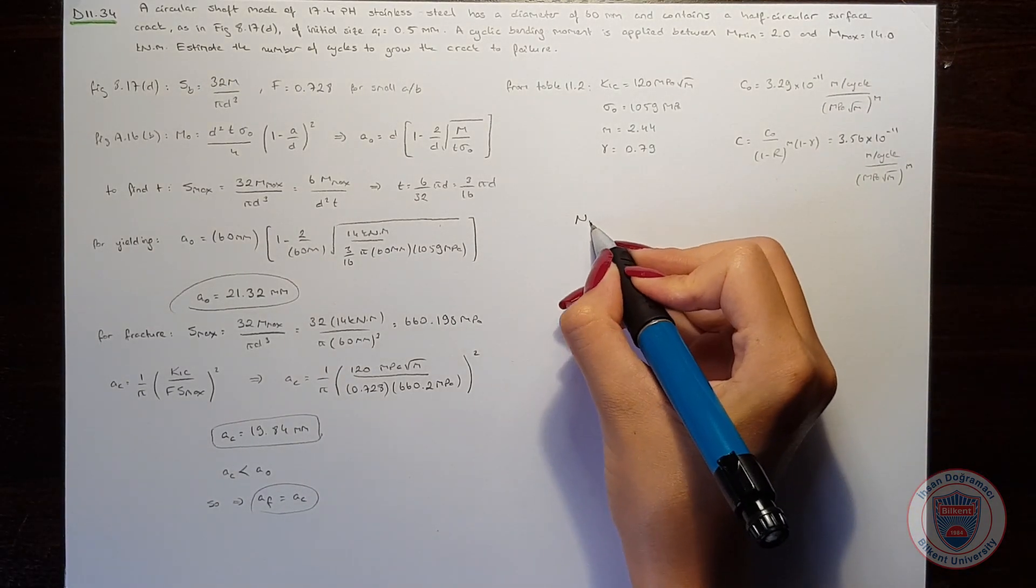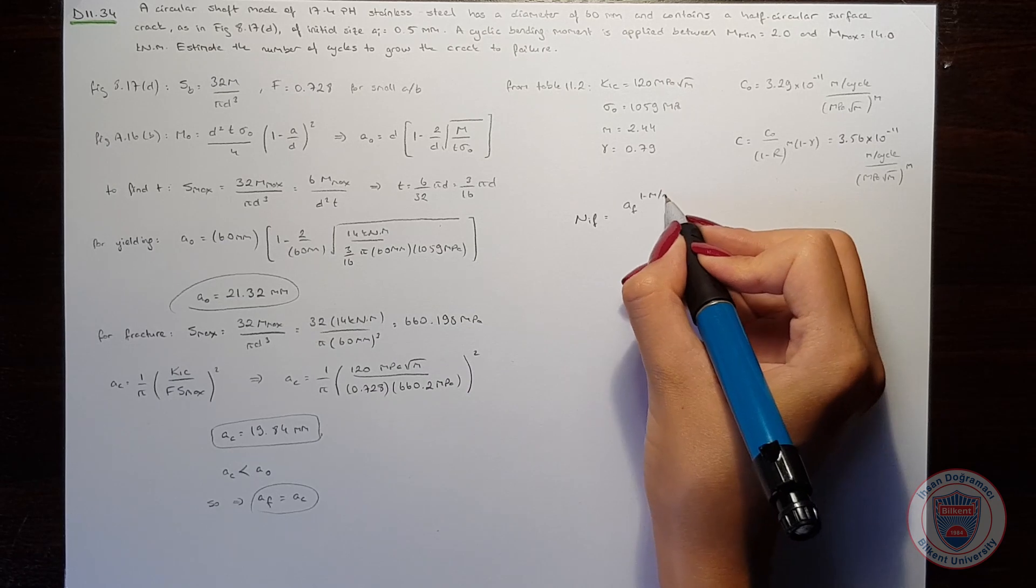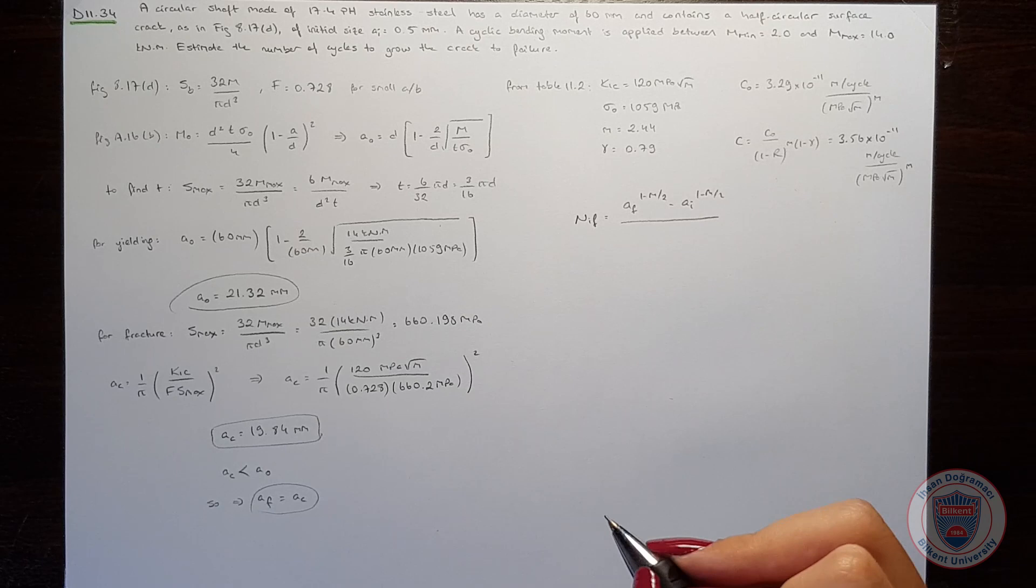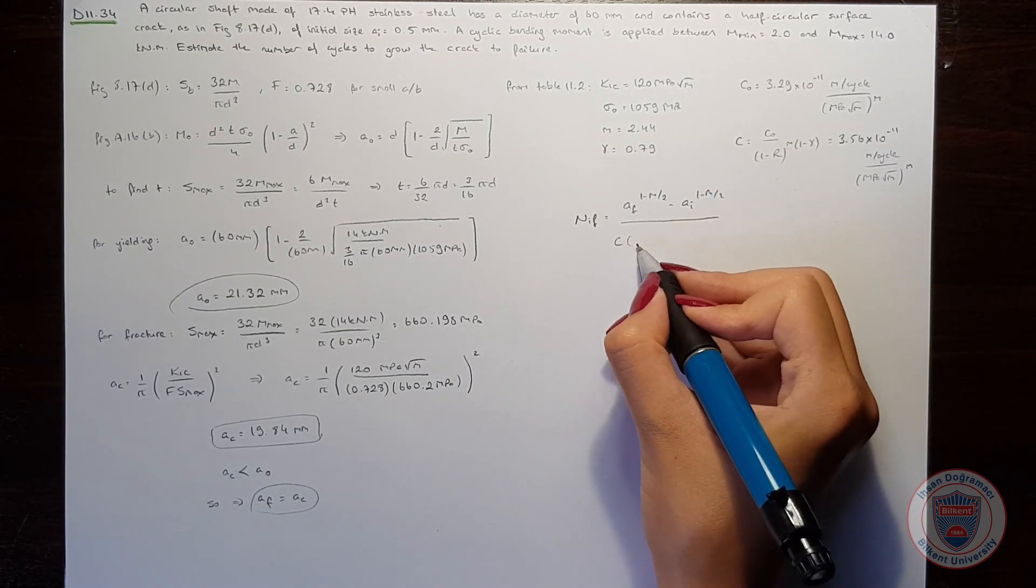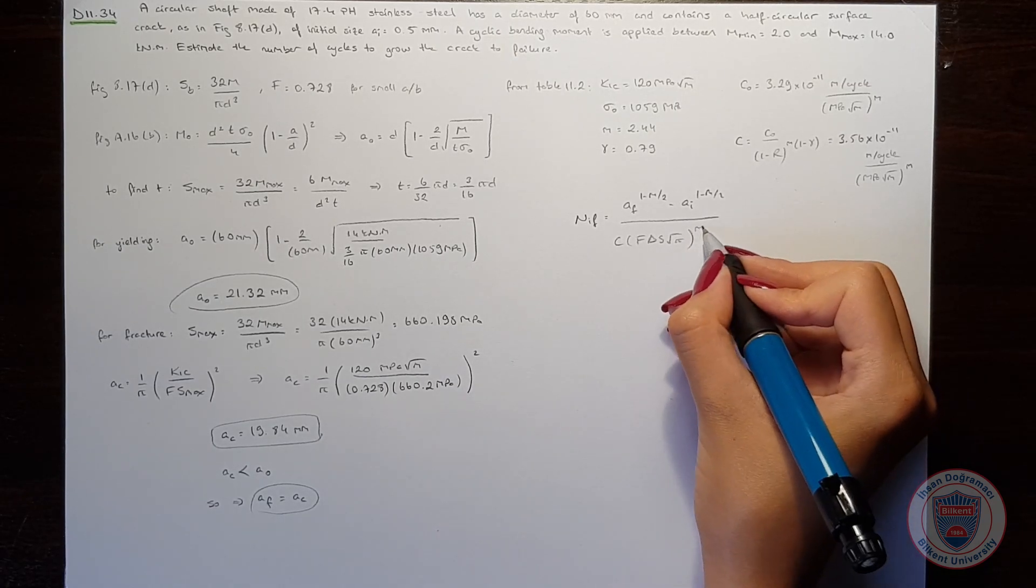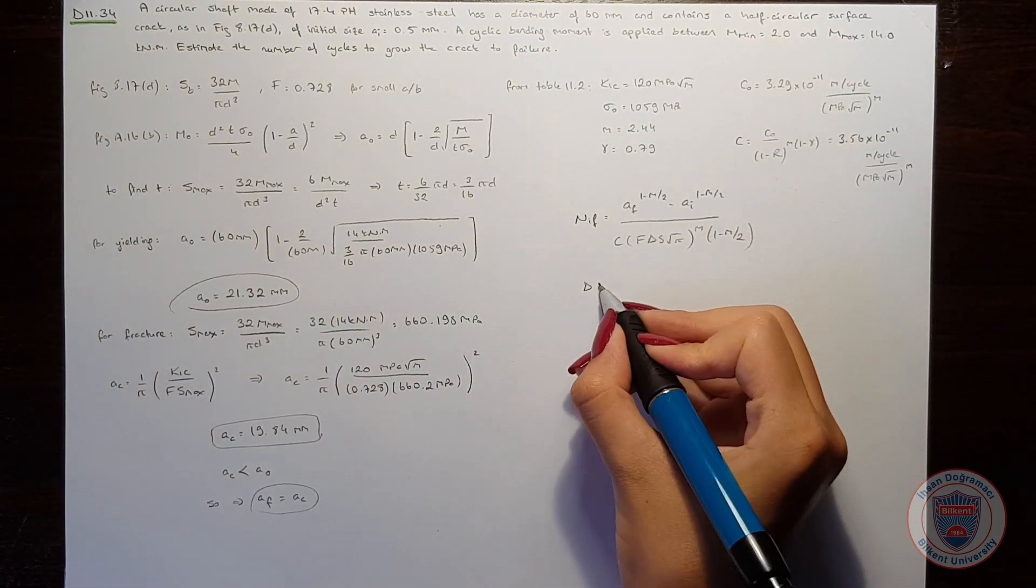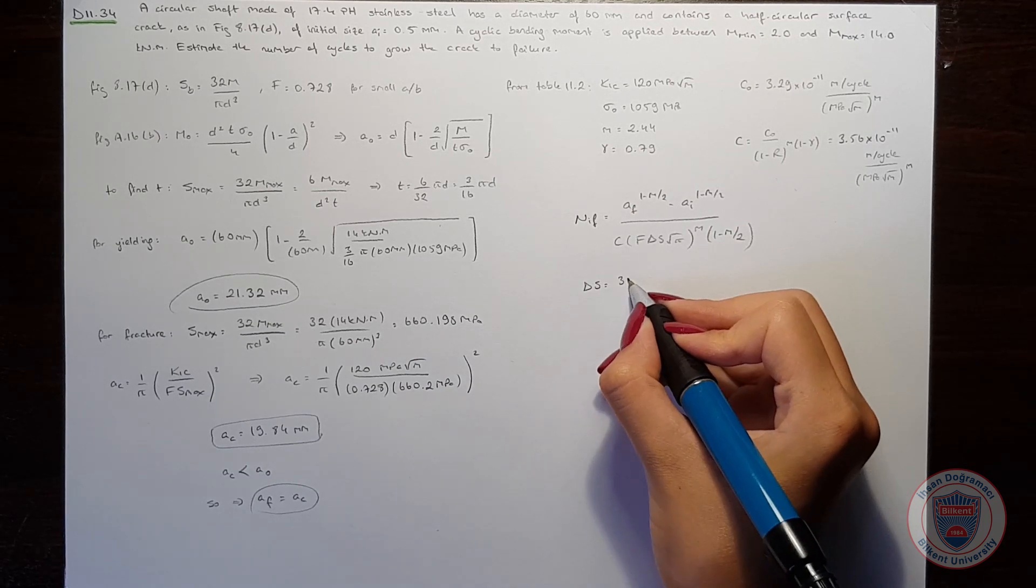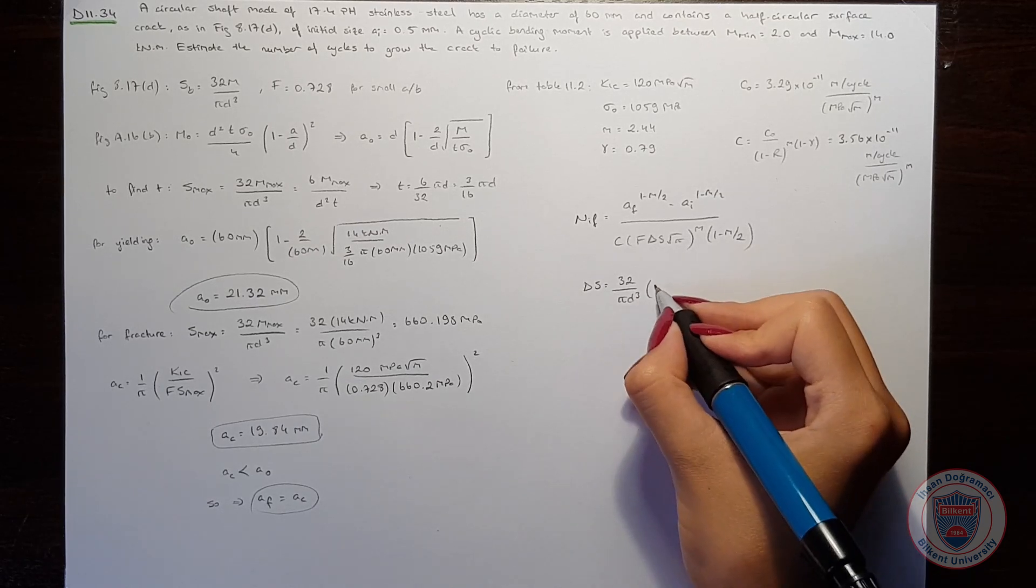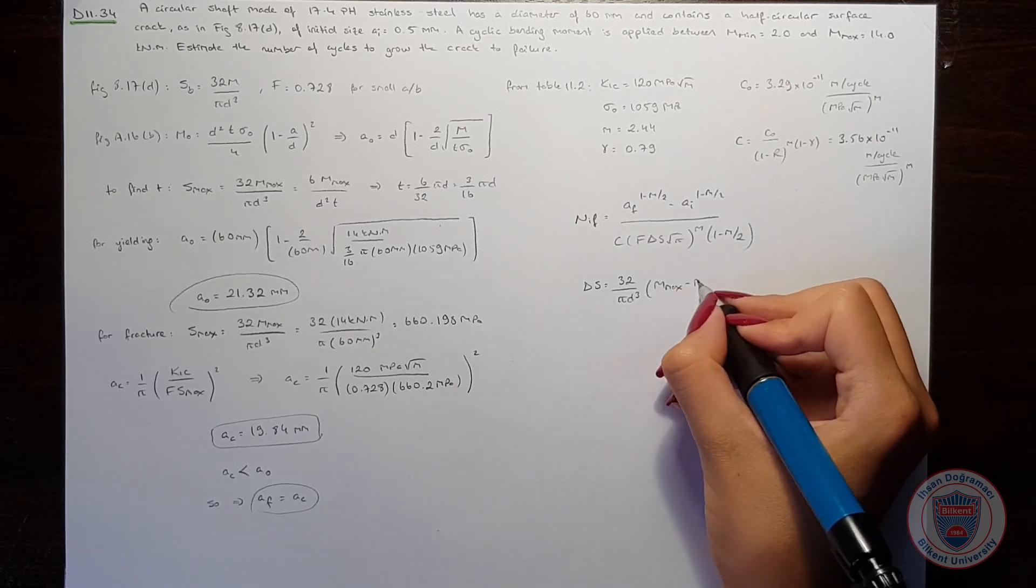We know that the number of cycles will be equal to... ΔS will be equal to 32 over πd³. So, we will use the maximum moment minus the minimum moment.